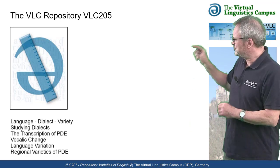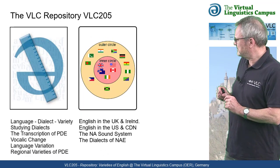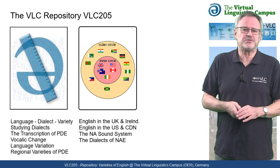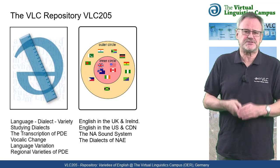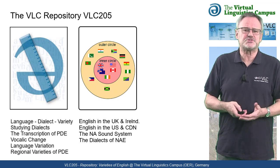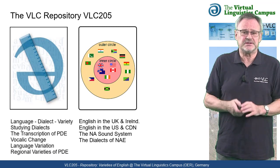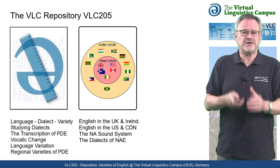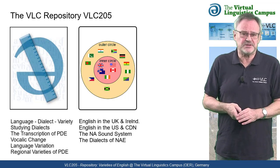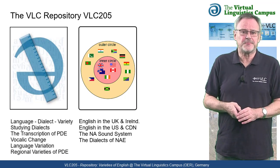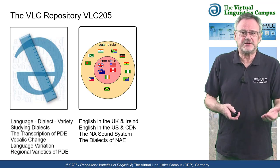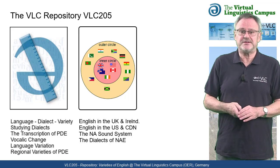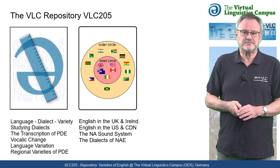Part two focuses on those varieties of English that are part of the so-called inner circle, that is English in the United Kingdom and Ireland, in North America, as well as in Australia and New Zealand.